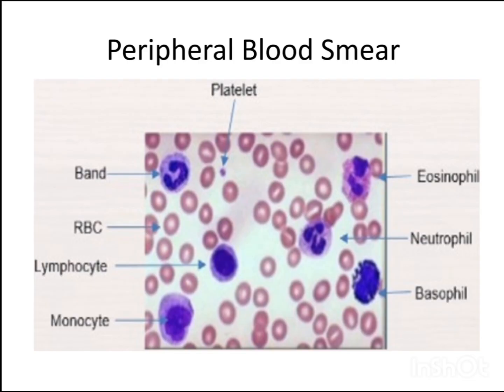First, let us look at this peripheral blood smear. We will try to know the morphology of all the cells in this peripheral blood smear and then revise it subsequently. As you can see, RBCs also known as erythrocytes have a size of a lymphocyte nucleus. These are biconcave disc shaped and have central one-third pallor.